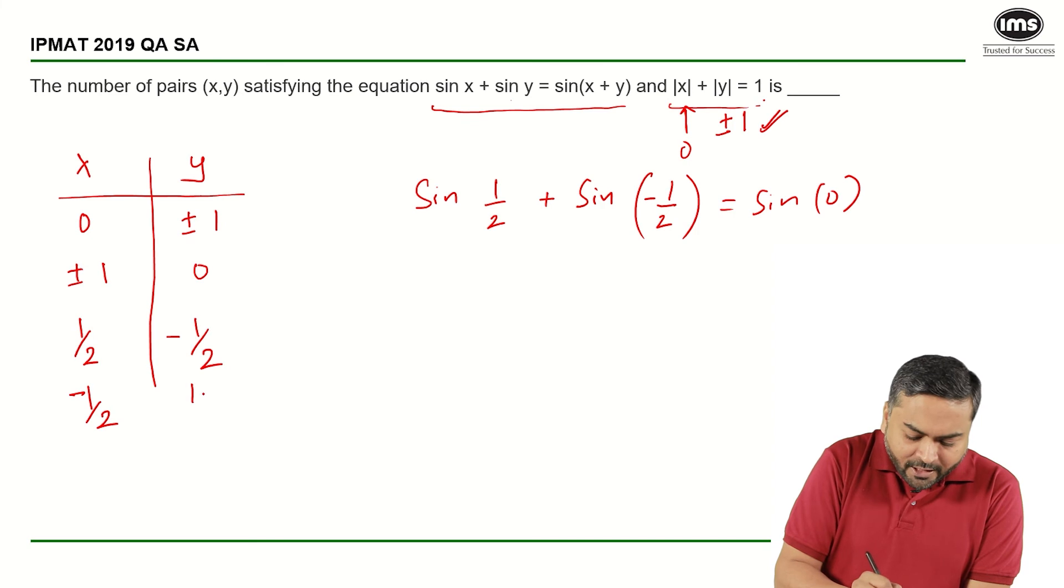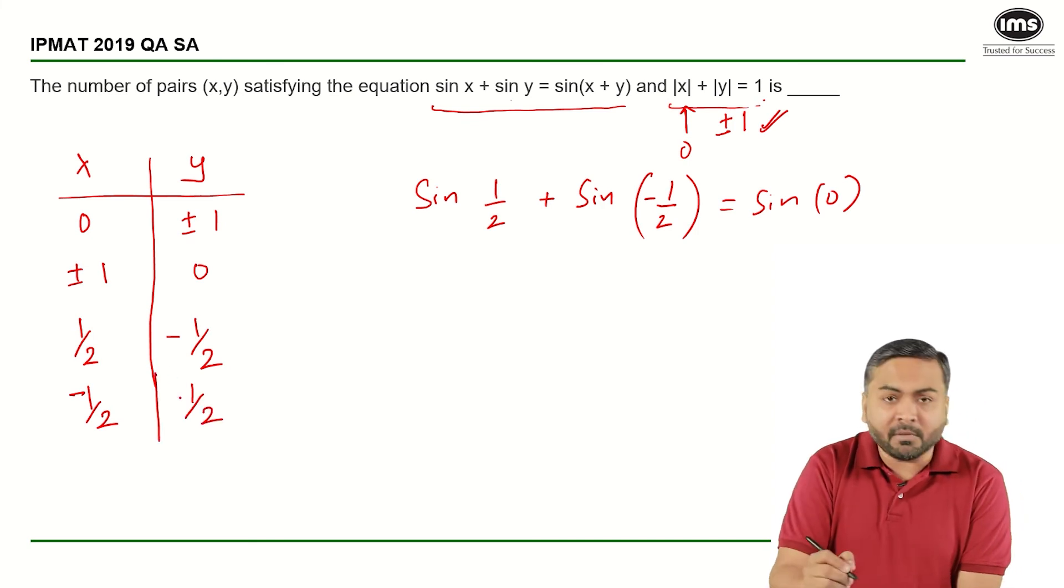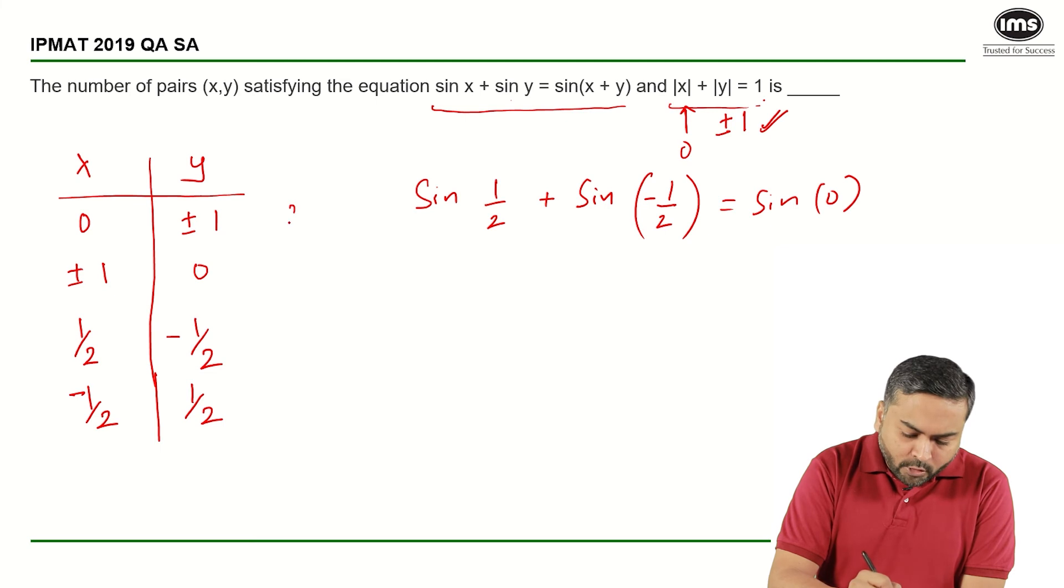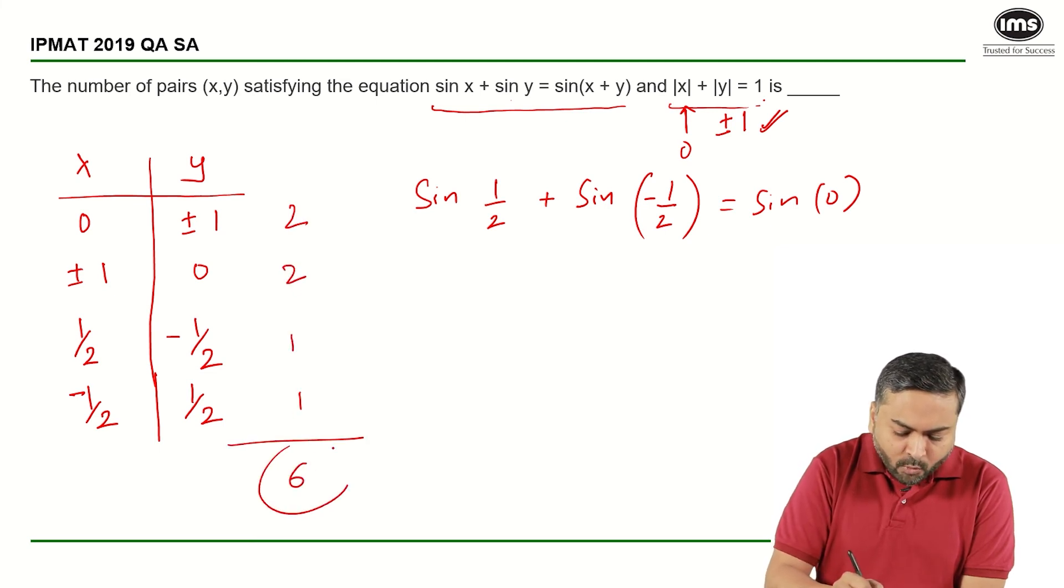x can be minus half and y can be half. So here I have two solutions, here I have two solutions, one solution, one solution, a total of six solutions is what I have.